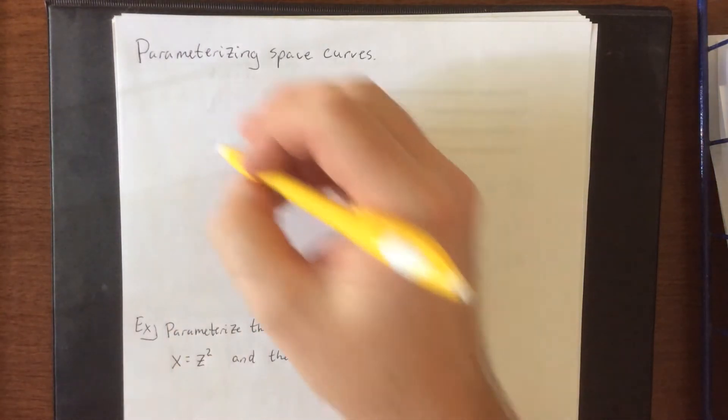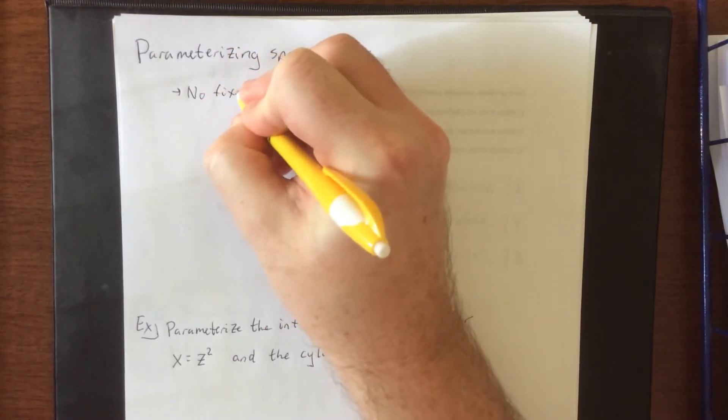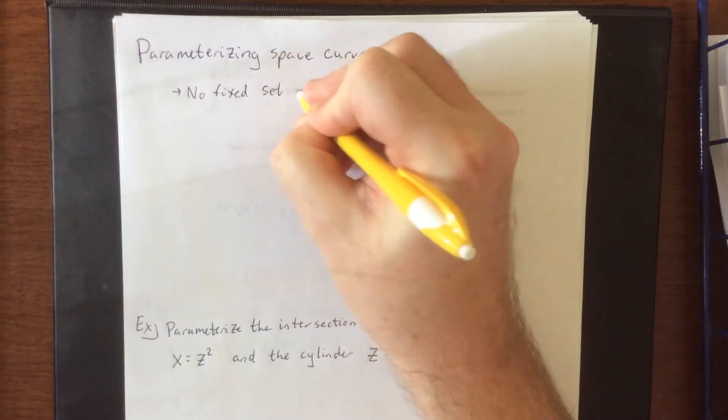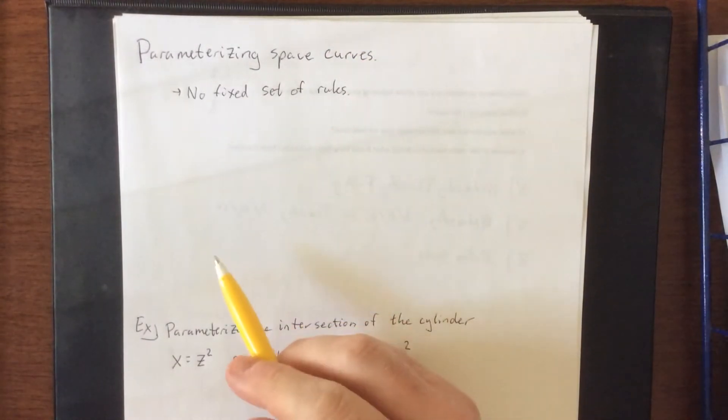So when it comes to parameterizing space curves, please know that there is no fixed set of rules. It's usually a matter of taking a look at what you have in the particular case that you have.